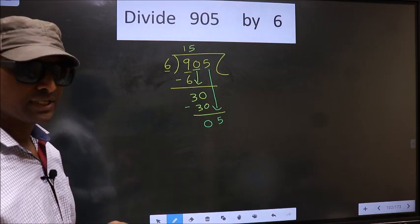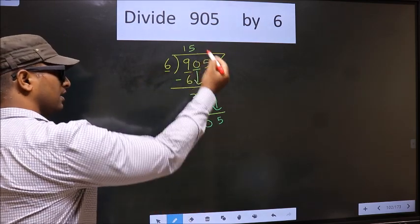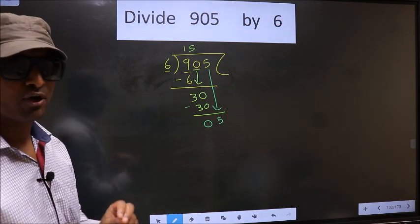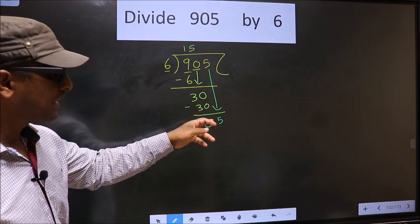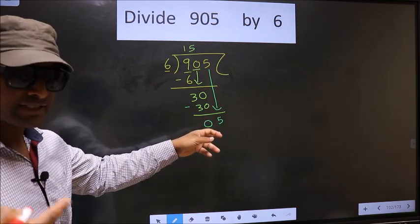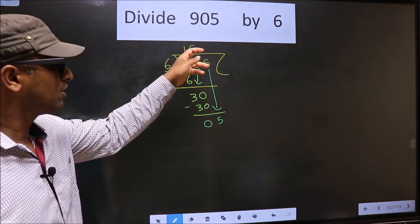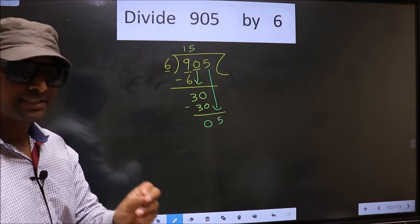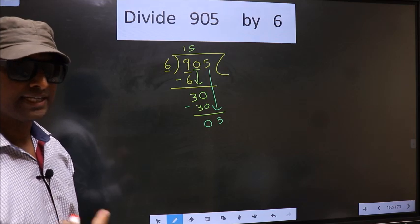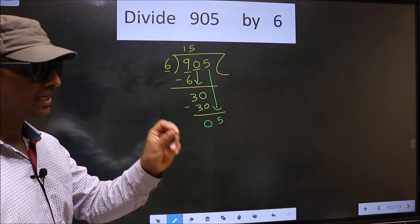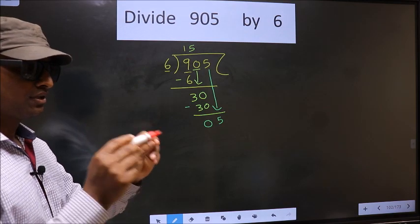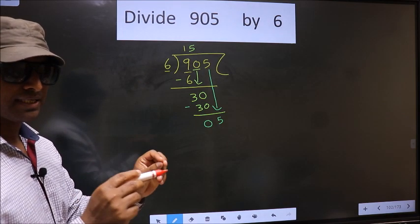What many do is put a dot and take 0 here, which is wrong. You just brought the number down, and in the same step you want to put a dot and take 0, which is wrong. Bringing the number down and putting a dot and taking 0 both at the same step—you are not supposed to do that.